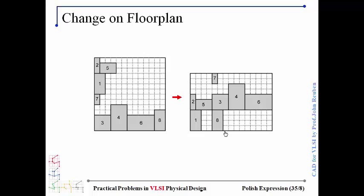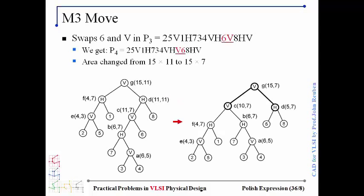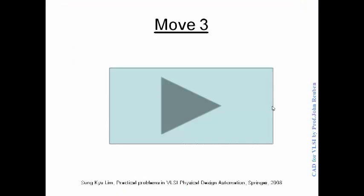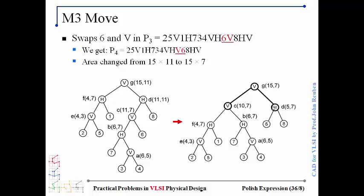The third move involves swapping an operand and an operator. Given this Polish expression, we are going to swap 6 and V. As you can see here, the slicing tree has changed — the change is highlighted — and we will see how it affects the floor plan.